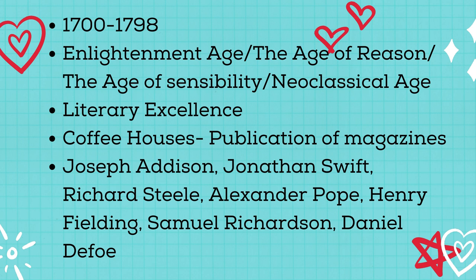The Augustan Age is also called the Enlightenment Age, or the Age of Reason, or the Age of Sensibility, or the Neoclassical Age. It was a period of literary excellence like that of the period of Augustus Caesar in the 1st century AD. Many literary groups emerged in the Augustan period, primarily based on shared political ideologies. They met in clubs, coffee houses, and chocolate houses, which were centres of literary debate, leading to the publication of magazines. Some of the most important writers are Joseph Addison, Jonathan Swift, Richard Steele, Alexander Pope, Henry Fielding, Samuel Richardson, Daniel Defoe, and Dr. Johnson.